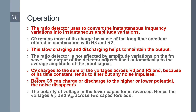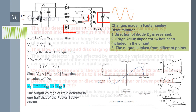The ratio detector is not affected by the amplitude variation on the FM wave. The output of the detector adjusts itself automatically to the average amplitude of the input signal. C9 charges to the sum of voltages across R3 and R2, and because of its time constant it tends to filter out any noise impulses present in the signal. The polarity of the voltage in the lower capacitor is reversed because the diode is in reverse connection.